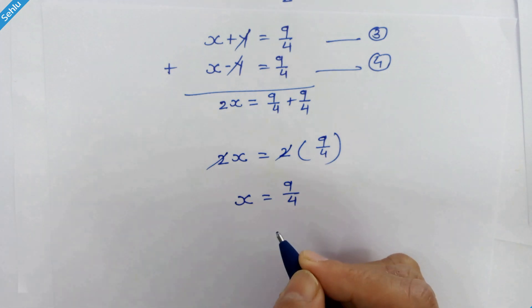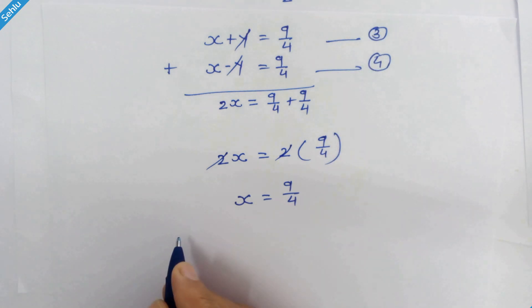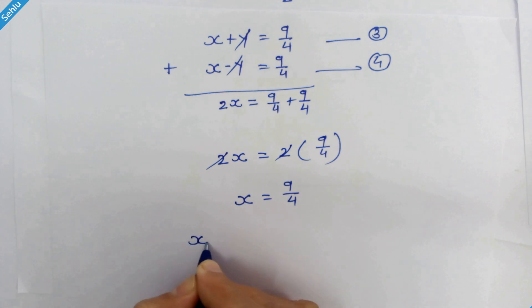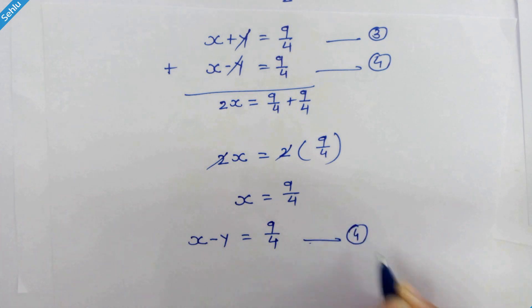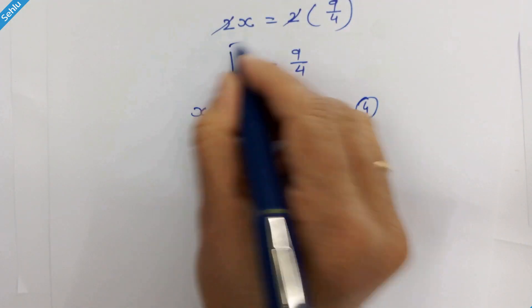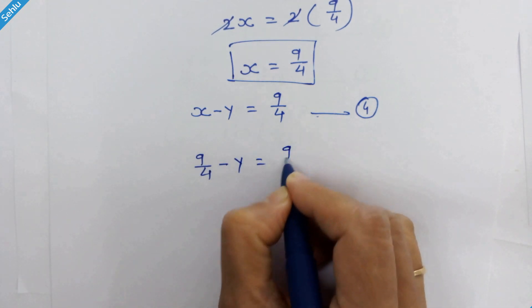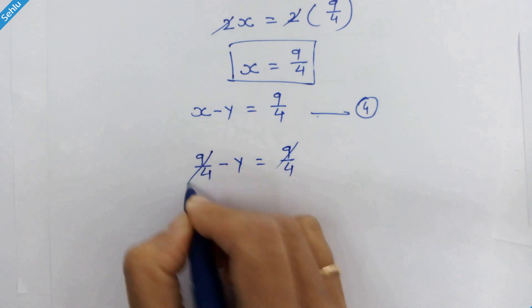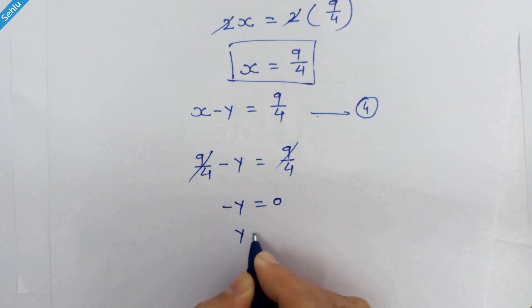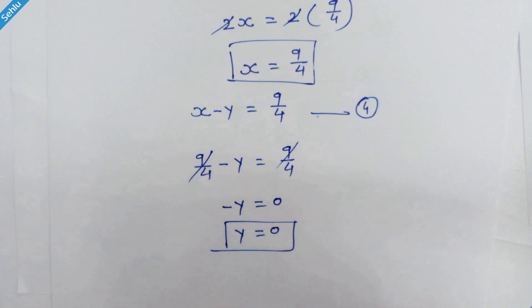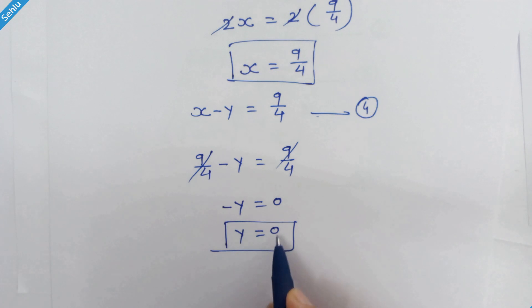We will substitute this value into equation 4, which is x − y = 9/4. Putting x = 9/4, we get 9/4 − y = 9/4. The 9/4 terms cancel out, giving us −y = 0, so y = 0. Therefore x = 9/4 and y = 0.